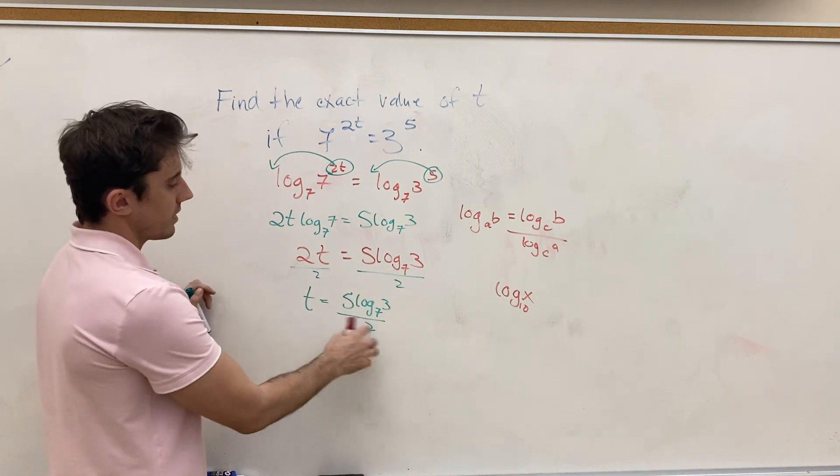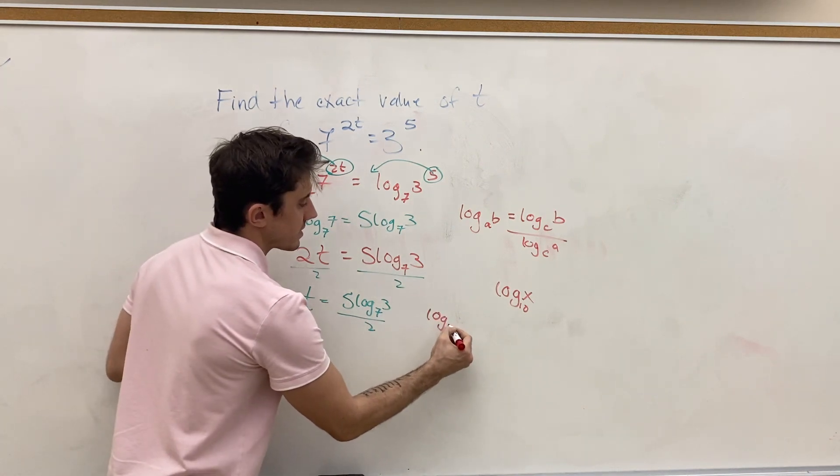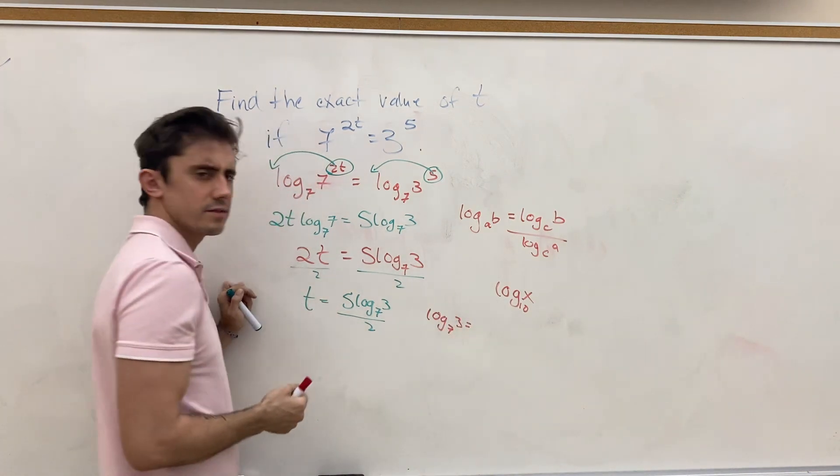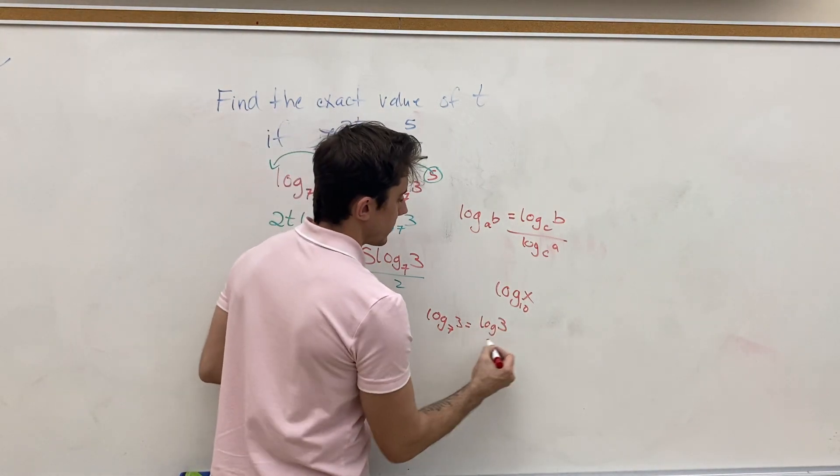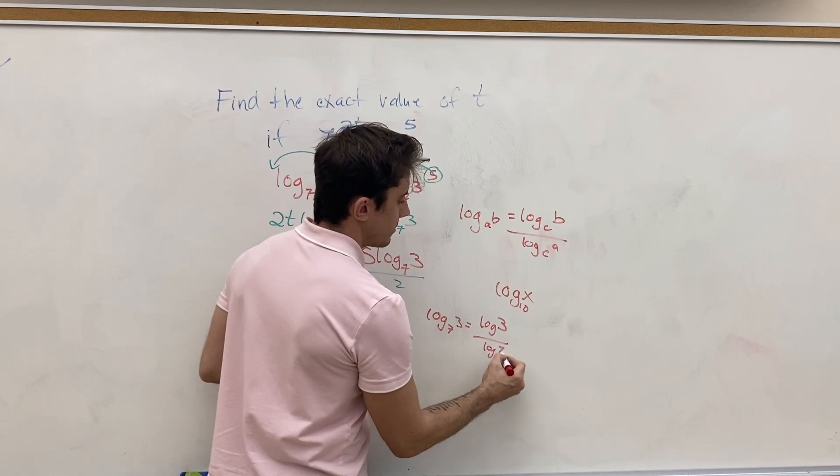So, with that in mind, we can write log base 7 of 3, which is a bit of a strange log, as log base 10, or just log of 3, divided by log of 7, which is easy to pop into a calculator.